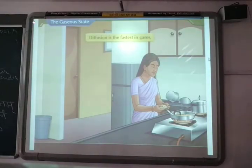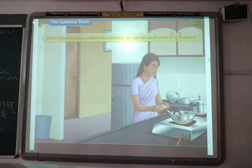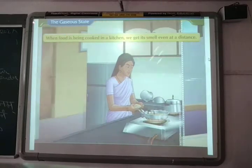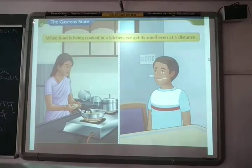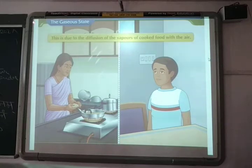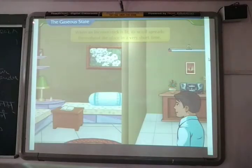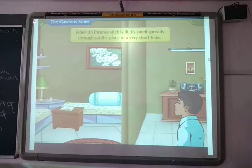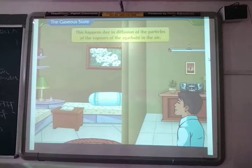Diffusion is the fastest in gases. When food is being cooked in the kitchen, we get its smell even at a distance. This is due to the diffusion of vapours of cooked food with the air. Similarly, when an incense stick is lit, its smell spreads throughout the place in a very short time. This happens due to diffusion of the particles of vapours of the incense in the air.